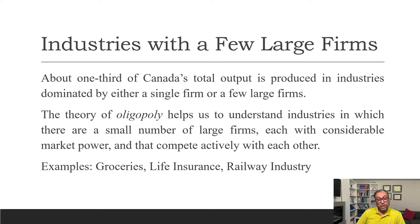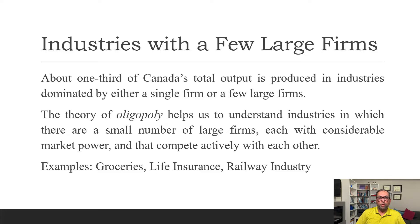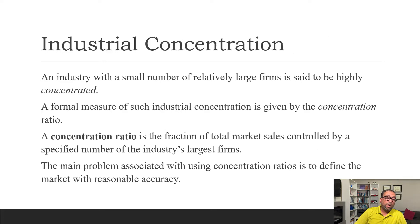About one third of Canada's total output is produced in industries dominated by either a single firm or a few large firms. The theory of oligopoly helps us understand industries with a small number of large firms, each with considerable market power, that compete actively with each other. Examples of oligopolies include groceries, life insurance, railways — with only two firms operating in Canada — and aviation, with just two or three airlines.